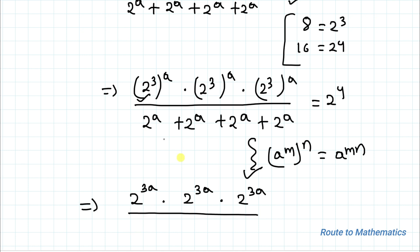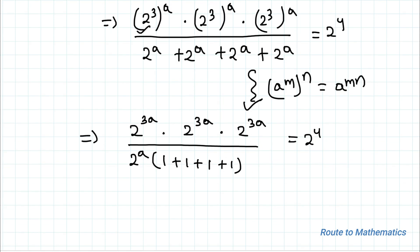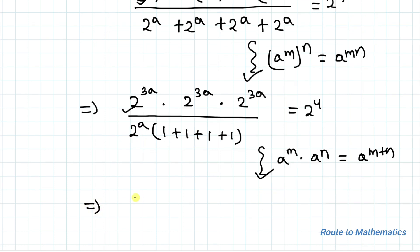For the denominator, taking 2 to the power a common, we get 2 to the power a times (1 plus 1 plus 1 plus 1). We also know the rule: a to the power m multiplied with a to the power n equals a to the power m plus n — when bases are the same, powers are added. Applying this in the numerator, we get 2 to the power (3a plus 3a plus 3a).